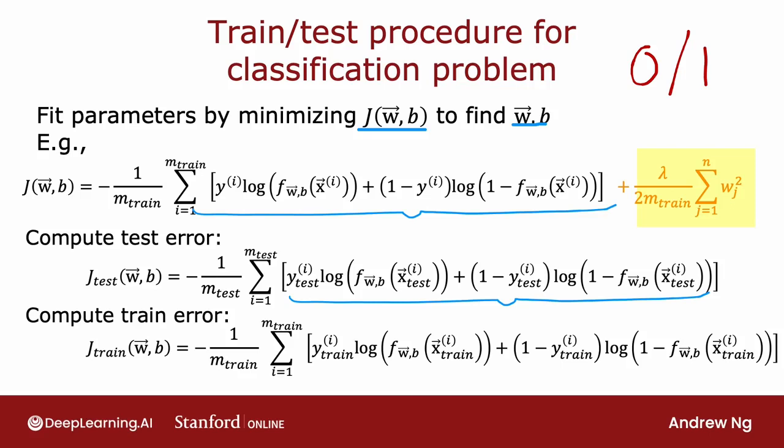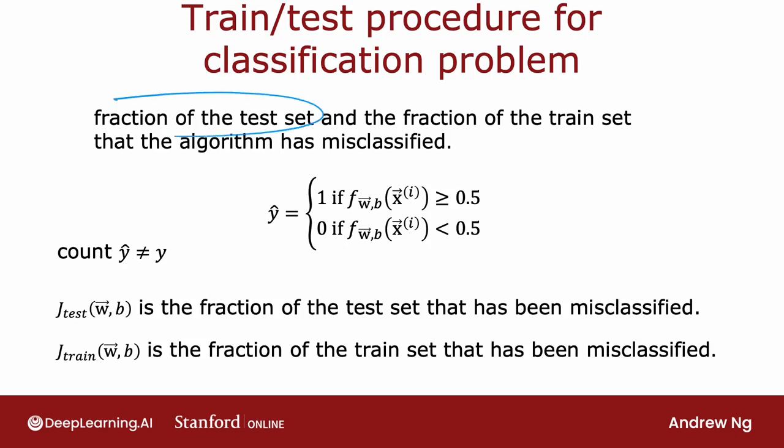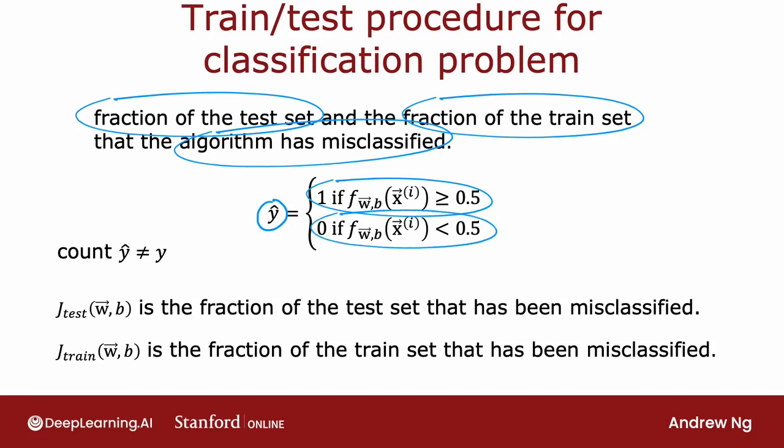While what I describe here will work okay for figuring out if your learning algorithm is doing well, by seeing how it was doing in terms of test error, when applying machine learning to classification problems, there's actually one other definition of j-test and j-train that is maybe even more commonly used, which is instead of using the logistic loss to compute the test error and the training error, to instead measure what's the fraction of the test set and the fraction of the training set that the algorithm has misclassified. So specifically, on the test set, you can have the algorithm make a prediction 1 or 0 on every test example. So recall y-hat, we would predict as 1 if f of x is greater than equal to 0.5 and 0 if it's less than 0.5. And you can then count up in the test set the fraction of examples where y-hat is not equal to the actual ground truth label y.